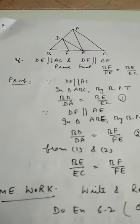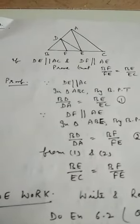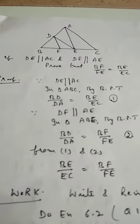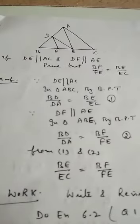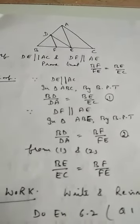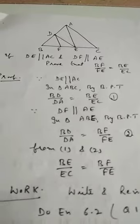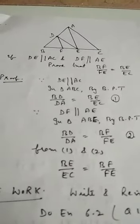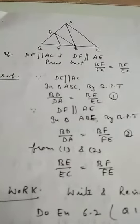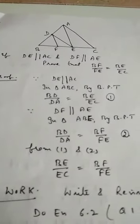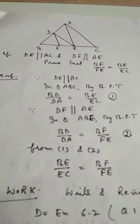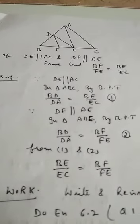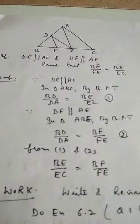Let's take question number 4 from exercise 6.2. In this figure, DE parallel to AC is given, and DF parallel to AE is also given. We need to prove that BF by FE equals BE by EC. We start from what is given. Since DE is parallel to AC, in triangle ABC, by BPT: BD by DA equals BE by EC. This is equation 1.